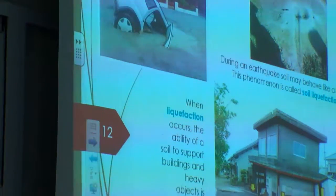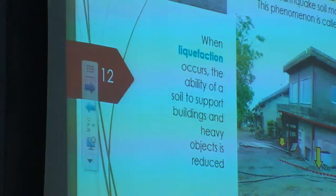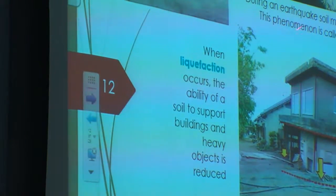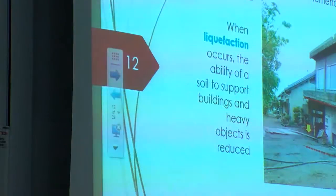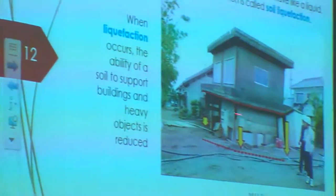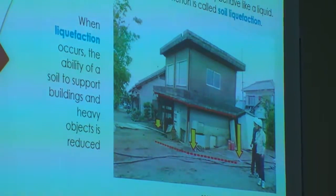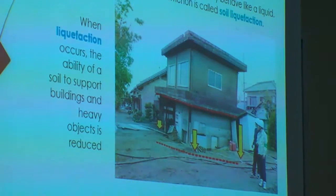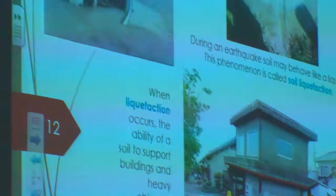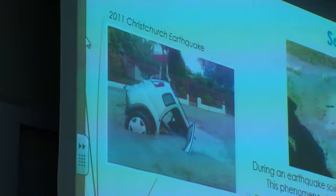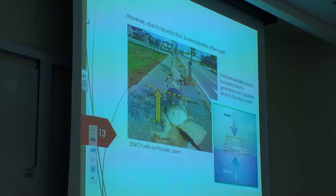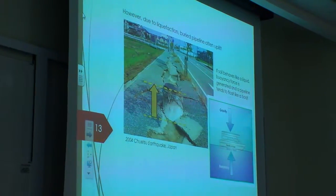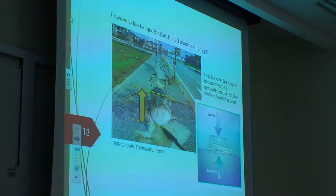So, liquefaction — I'm sure many of you living in Christchurch experienced liquefaction and could see its effect. Basically, during an earthquake, sandy soil might behave exactly like a liquid — that's why we call it liquefaction — and the effects are catastrophic. A building can sink: in this case in Japan, you can see that almost the entire first floor completely settled, so the house can no longer be used. Heavy objects tend to sink, but light objects actually tend to lift up — because they are surrounded by soil behaving like a liquid. That's why a pipe would behave like a boat due to buoyancy force.